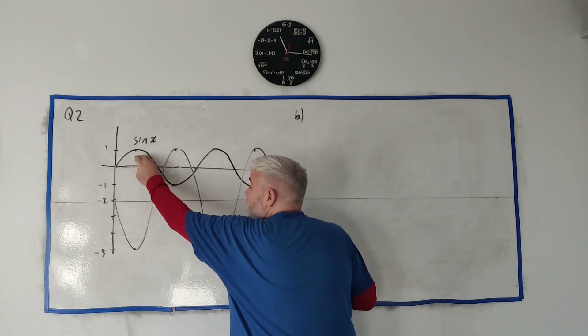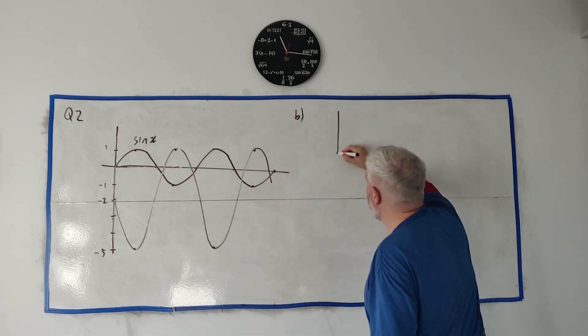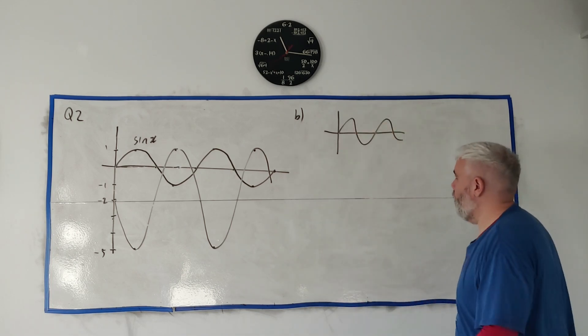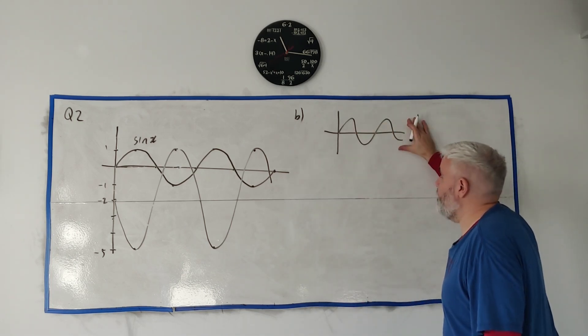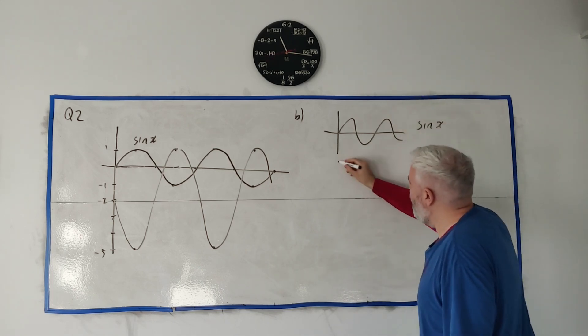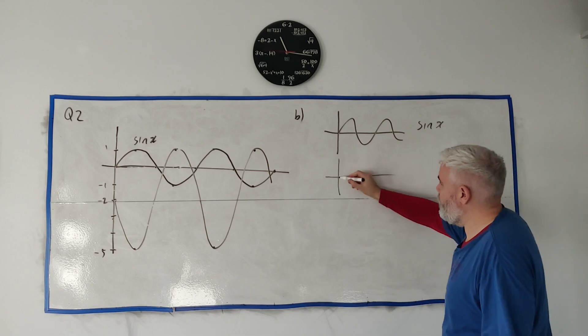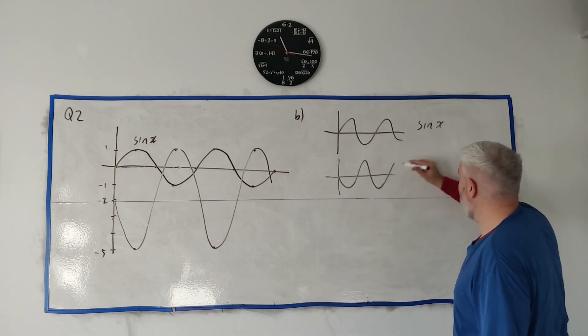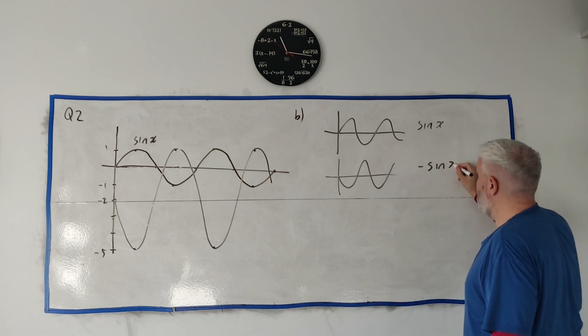So I think of sin x. Let's draw it here, I'll be very rough because otherwise I'll run out of room. Sin x looks like this. Let me write these in each time: sin x. Then they suggest inverting it, that's turning it upside down, that's actually just minus sin x.